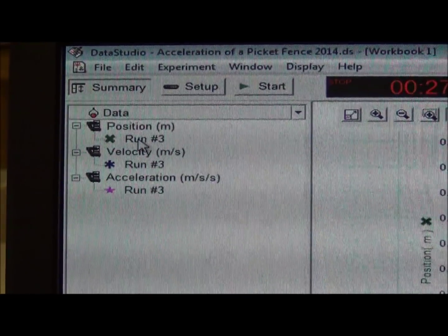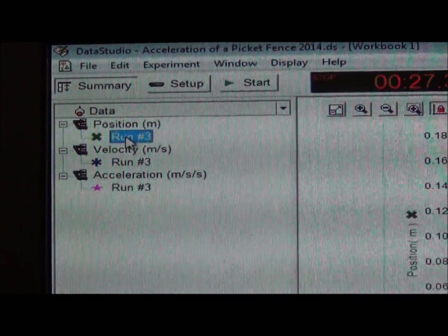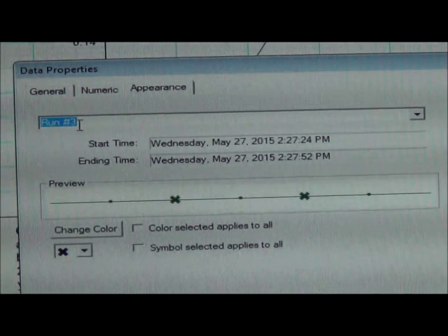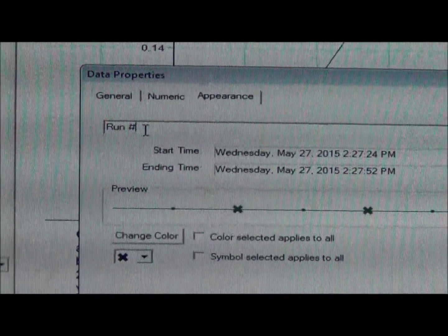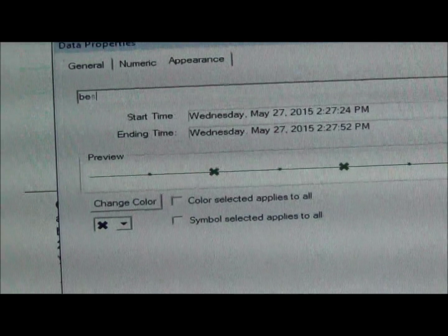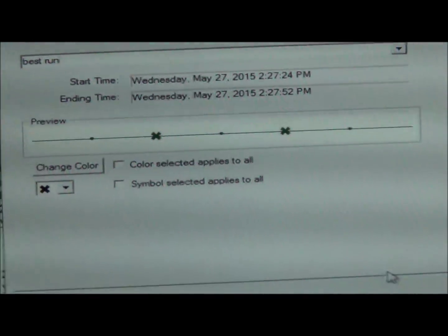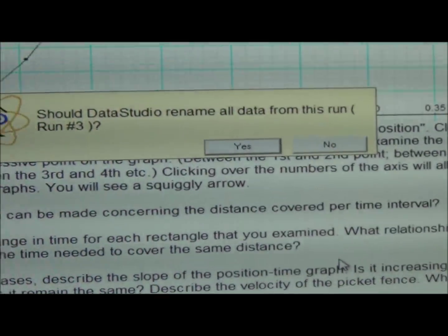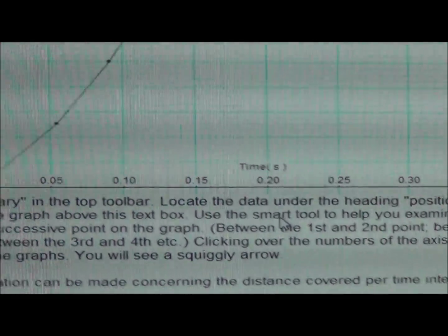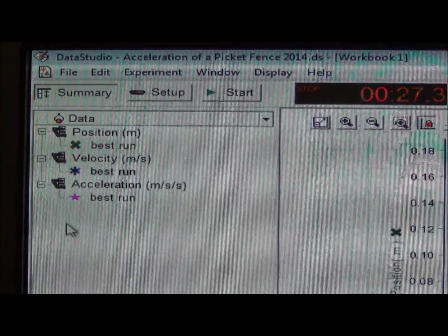When in the Summary section of Data Studio, you can also rename the runs. Click on a particular run. You're going to have a screen open up which is going to allow you to backspace. I can call this Best Run. I'm going to select OK. Data Studio is going to ask me if I'd like to rename it. Indeed I would. When I look over here in the Summary section, it has been renamed.